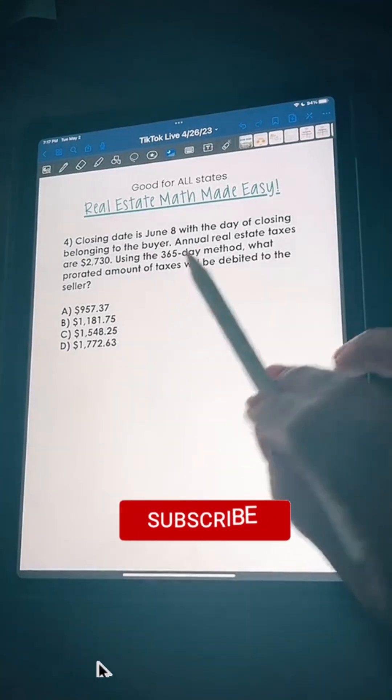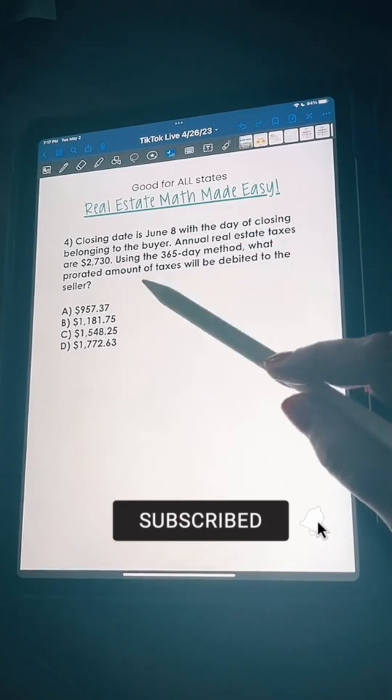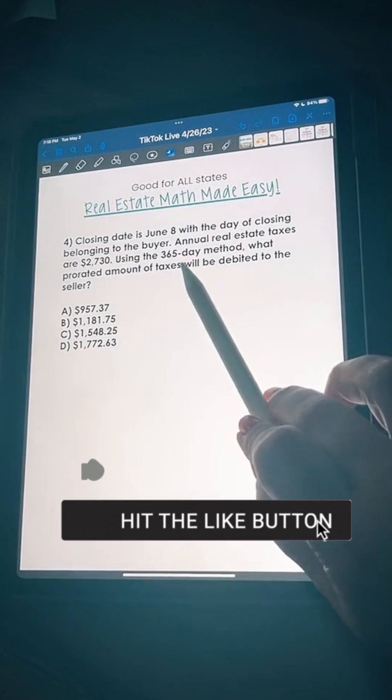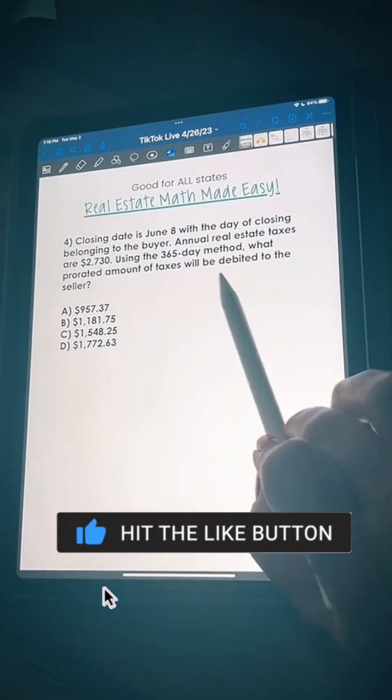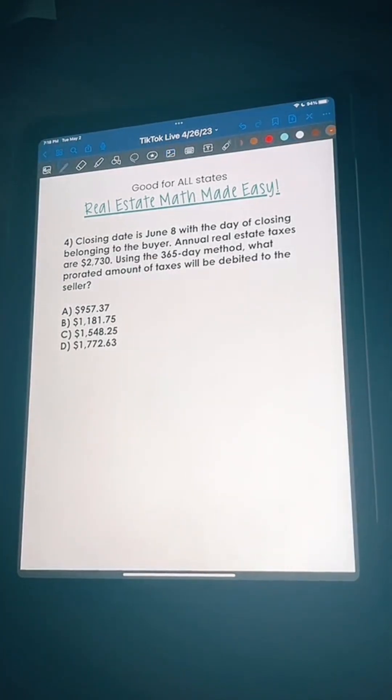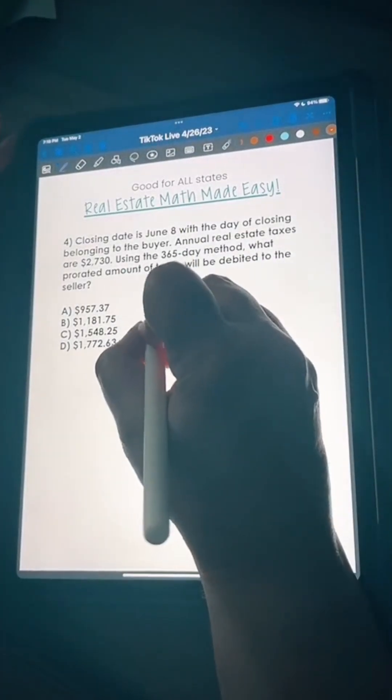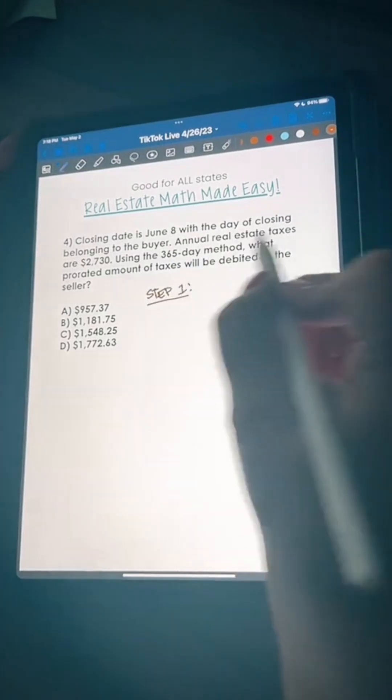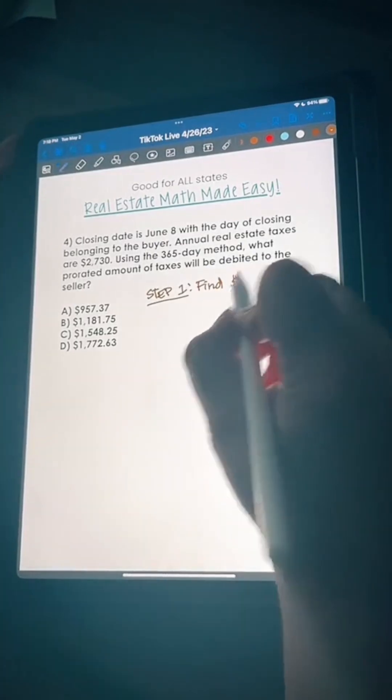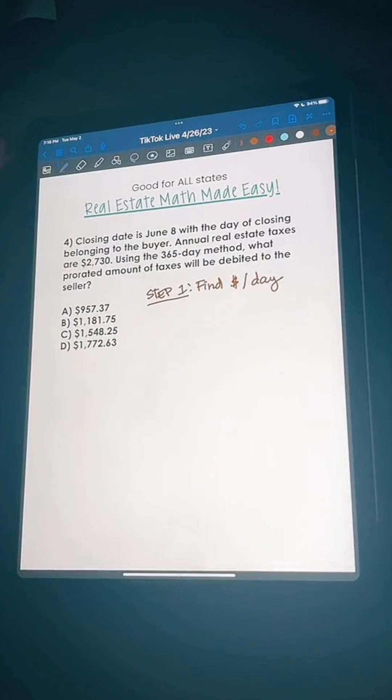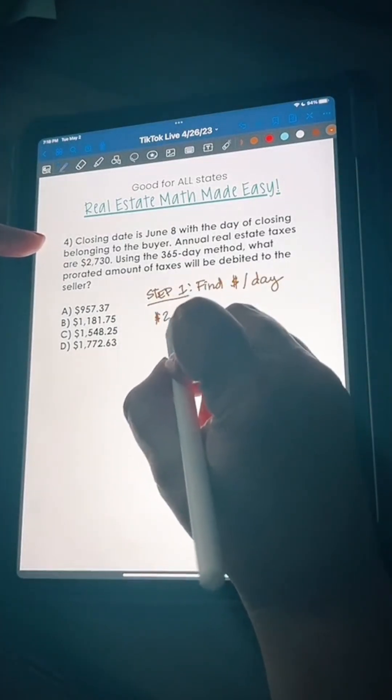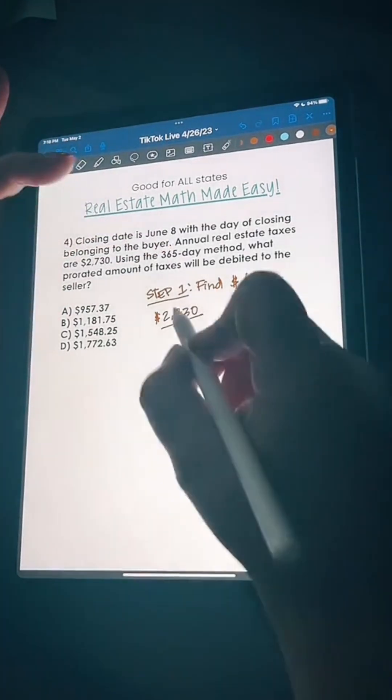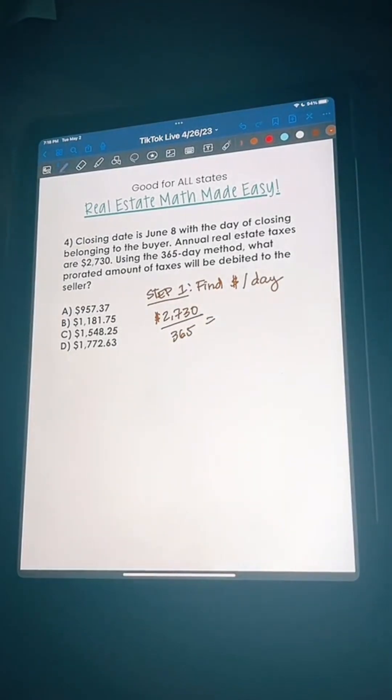The fourth question says closing date is June 8th with the day of closing belonging to the buyer. Annual real estate taxes are two thousand seven hundred thirty dollars. Using the 365 day method, what prorated amount of taxes will be debited to the seller? Since taxes haven't been paid yet, it's only June. Remember taxes are paid like November. Here we're going to do three steps. Step one is find cost per day.